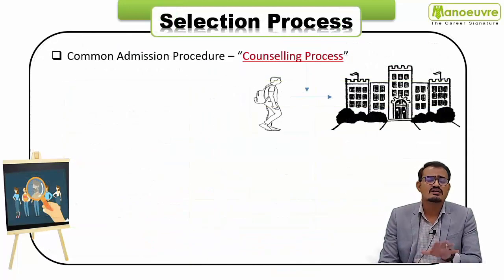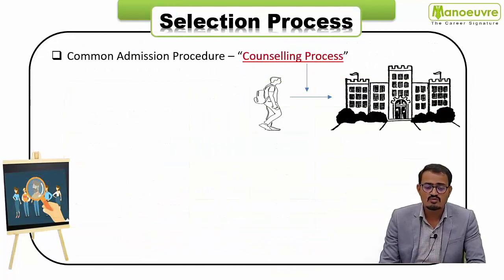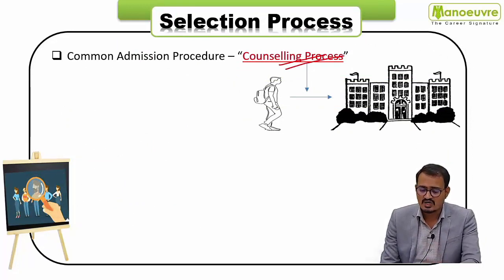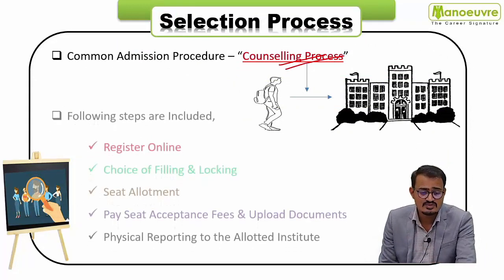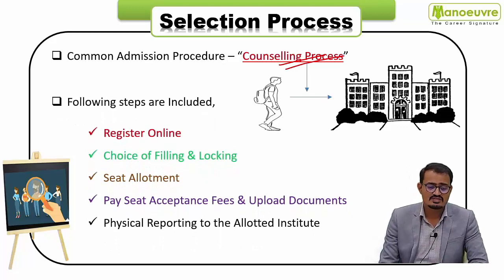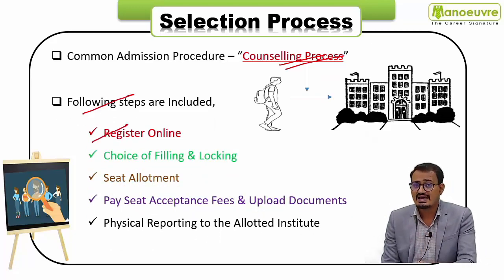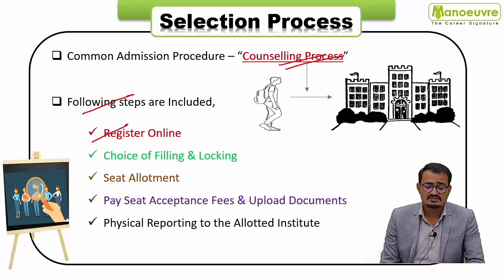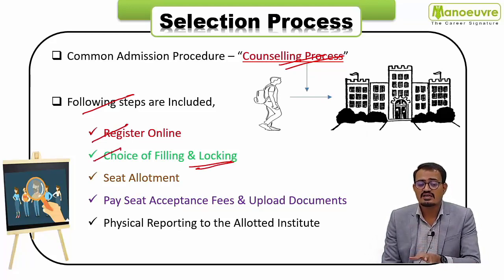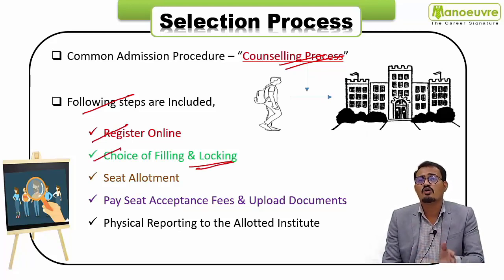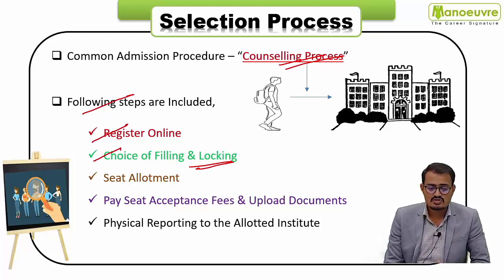The selection process is a counseling process — the common admission procedure. The steps are: first, register online; then the choice-filling and locking window opens, where you give all your preferences in decreasing order — for example, IHM Pusa as first preference, IHM Mumbai second, IHM Goa or Chennai third and fourth.